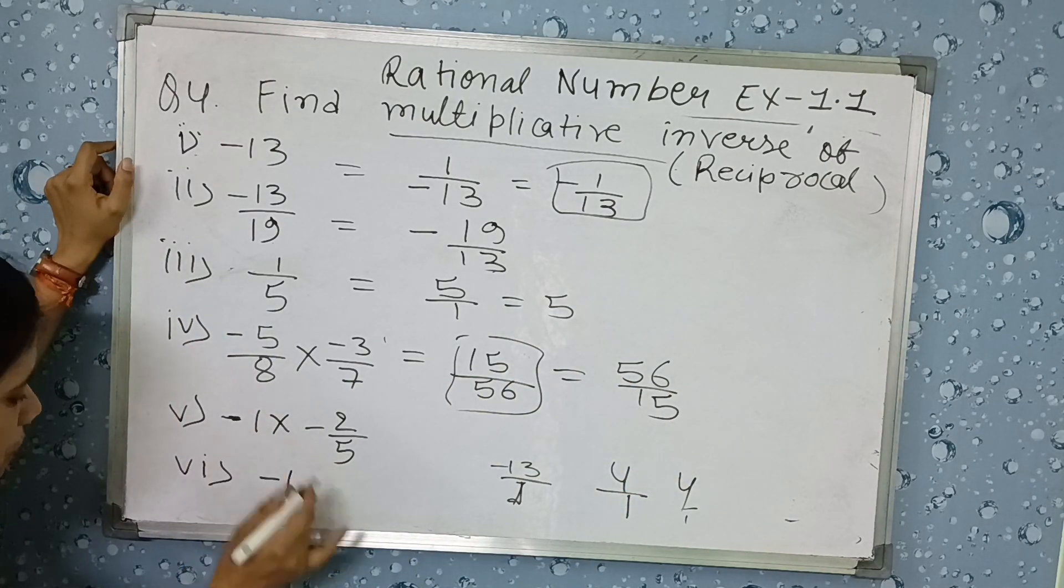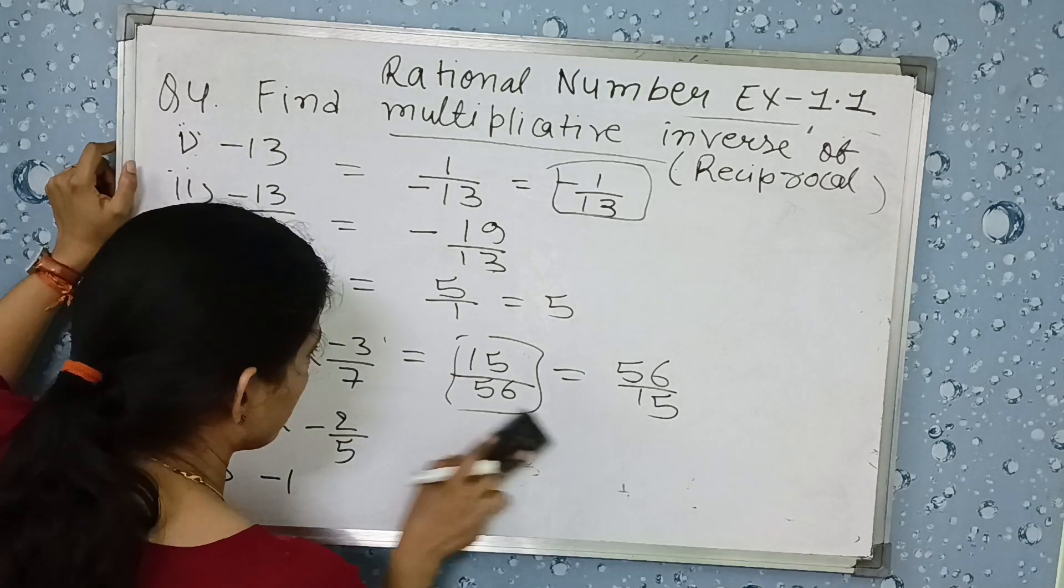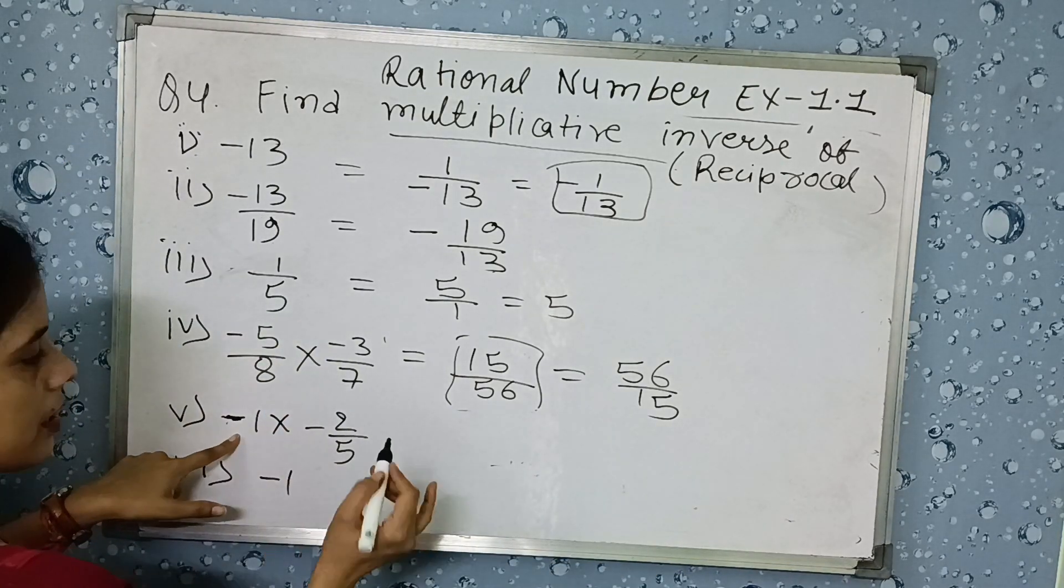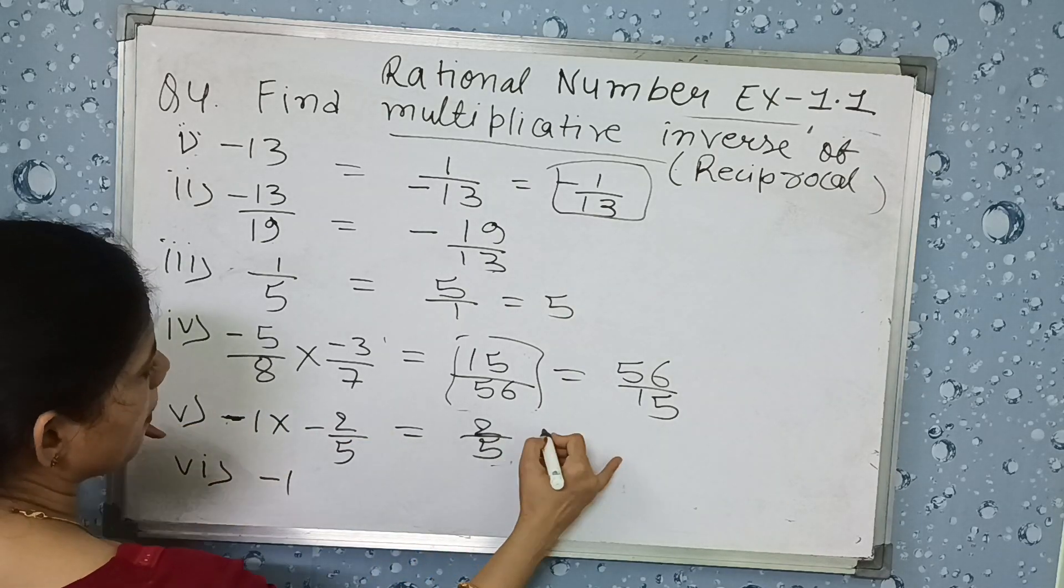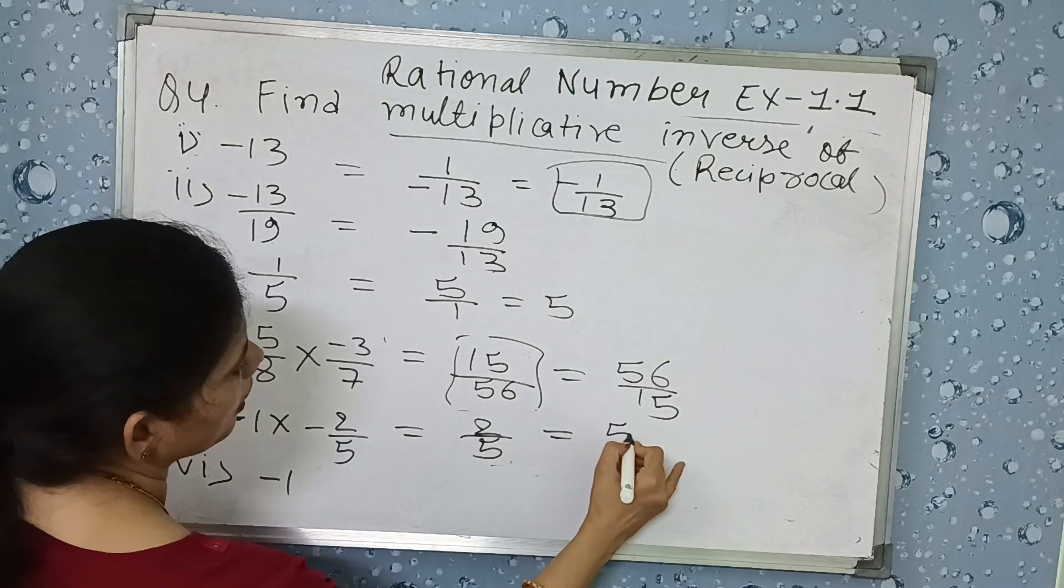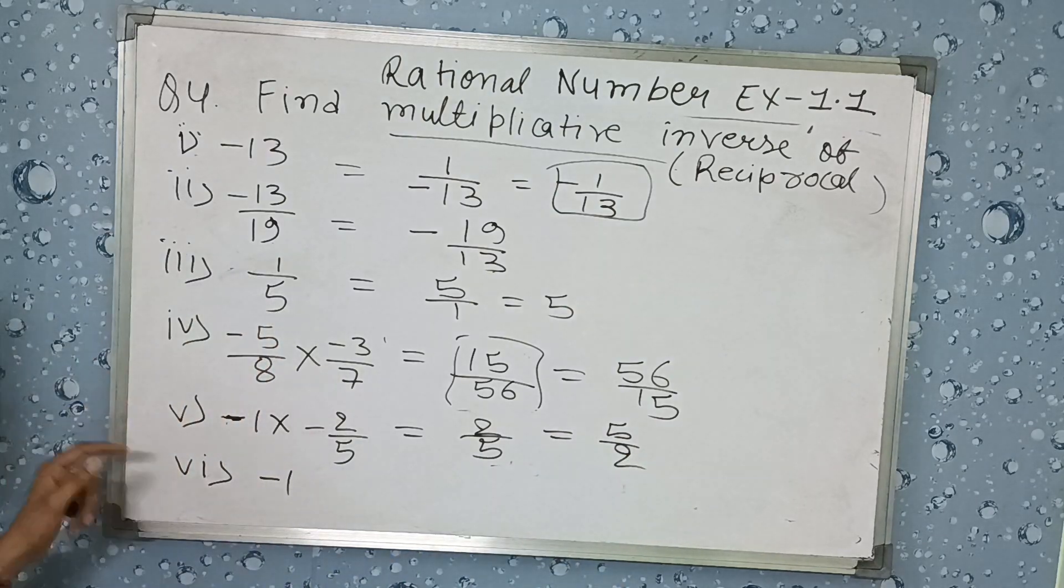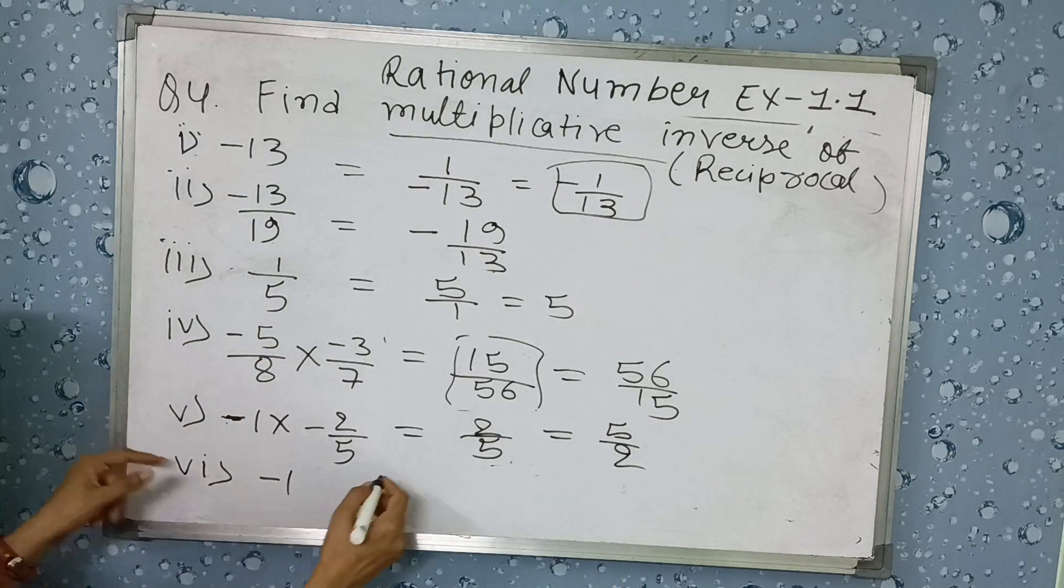Same, here you need to simplify first. Minus minus means it is plus, and 2 times 1 is 2, it is 2 by 5. Now their reciprocal is 5 by 2.